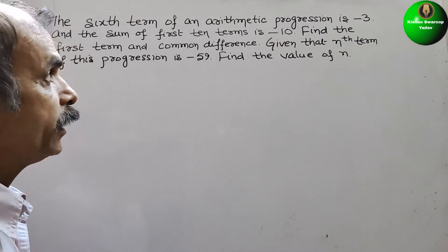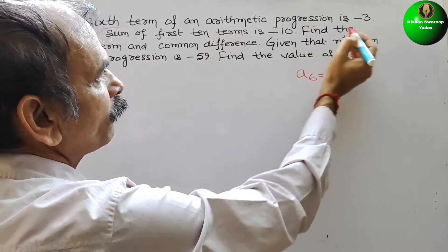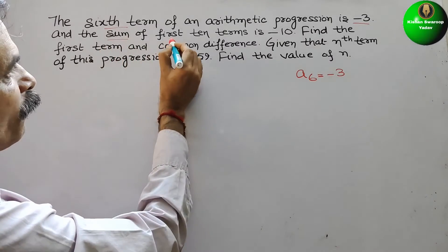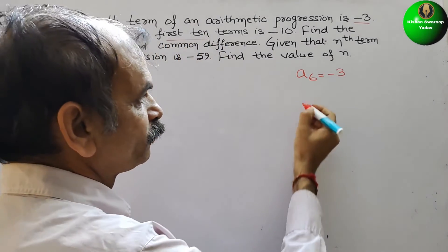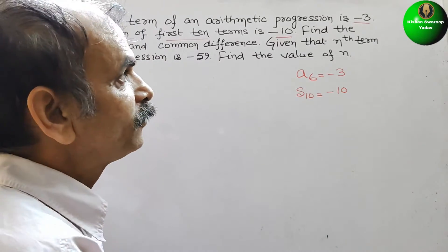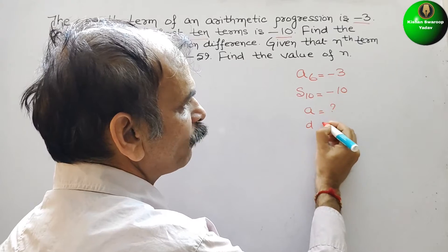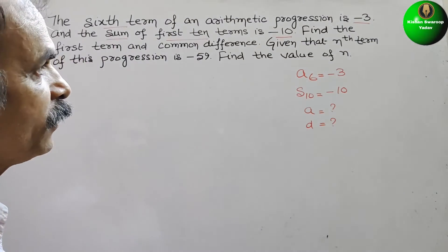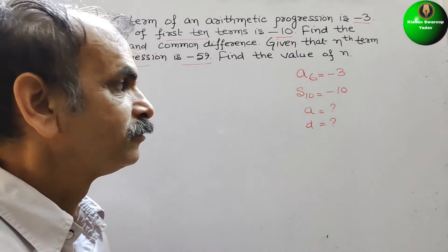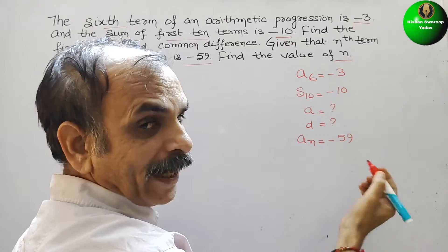Let's see what they have given. The sixth term means a6 is equal to minus 3. Next, the sum of first 10 terms means S10 is equal to minus 10. We have to find out a and d. Also given that the nth term an is equal to minus 59, and we have to find out the value of n.